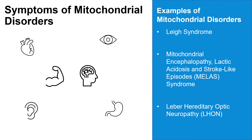Mitochondria play an important role in our organs that require a lot of energy. Therefore, mitochondrial disorders can affect one or more systems in the body. While symptoms of mitochondrial disorders may vary, some common symptoms include neurological issues like seizures and strokes, developmental delays, and visual or hearing problems.